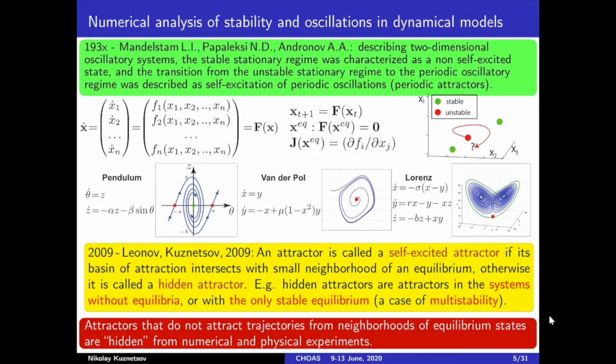In the framework of the theory of oscillations, Andronov and his supervisors and colleagues described a stable stationary regime as a non-self-excited state. The transition from an unstable stationary regime to a periodic oscillation was described as self-excitation of periodic oscillations. The famous book of Andronov's theory of oscillations was devoted to two-dimensional systems only, and multidimensional models and chaotic behavior were not considered there.